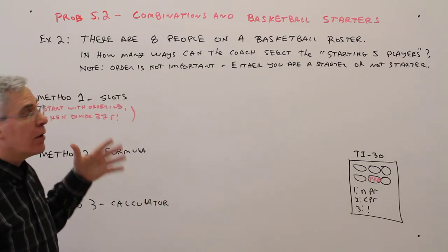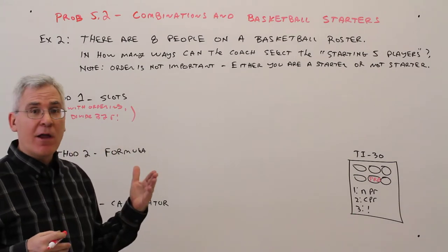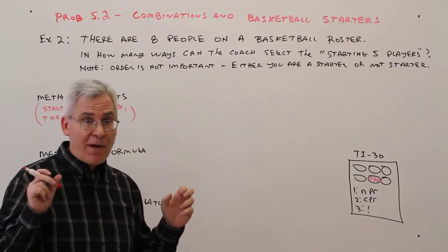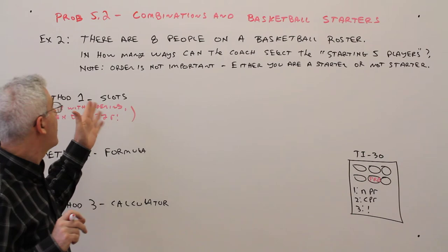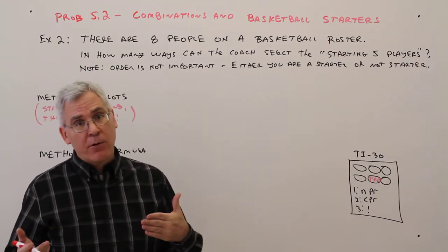Here's Example 2. There are 8 people on the basketball roster. In how many ways can the coach select the starting 5 players? Note, order is not important. Either you're a starter or you're a bench player.